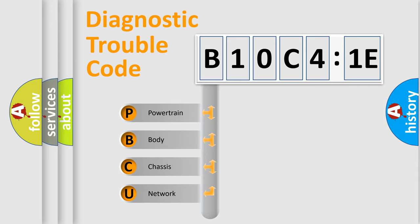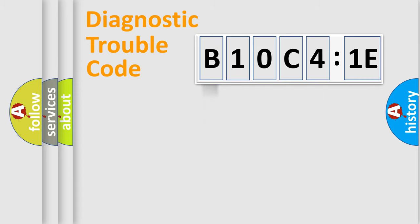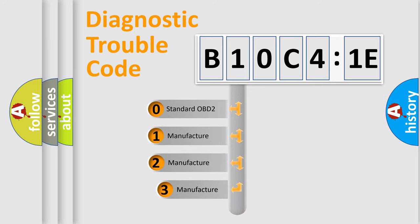If the second character is expressed as zero, it is a standardized error. In the case of numbers 1, 2, 3, it is a car-specific error. The third character specifies a subset of errors. The distribution shown is valid only for the standardized DTC code.